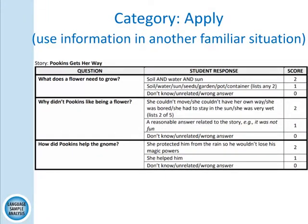Category apply — using information in another familiar situation, taking what you know from the book and applying it to a different situation. What does a flower need to grow? The flower needs soil, water, and sun — you have to have all three for a score of two; any two is a one. Why didn't Pookins like being a flower? She couldn't move, couldn't have her own way, was bored, had to stay in the sun, or was wet — you need two of the five listed. How did Pookins help the gnome? She protected him from the rain so he wouldn't lose his magic powers — you need both pieces; if the student says she helped him, that's only a one.